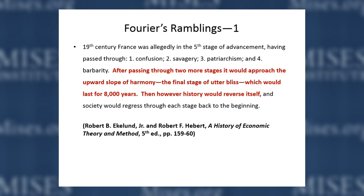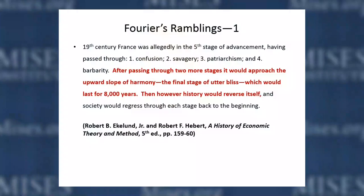Here were some of his ramblings. He told us that 19th-century France was in the fifth stage of advancement, having passed through confusion, savagery, patriarchism, and barbarity. After two more stages, it would approach the 'upward slope of harmony,' the final stage of utter bliss, which would last for 8,000 years. All socialists have this idea that we're moving towards a stage of utter happiness — a heaven on earth. After 8,000 years, history would reverse and society would regress back to the beginning. This is what we call gnosis — a secret source of information only the socialist planner is privy to.